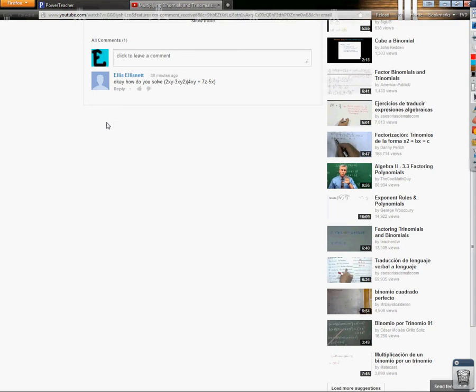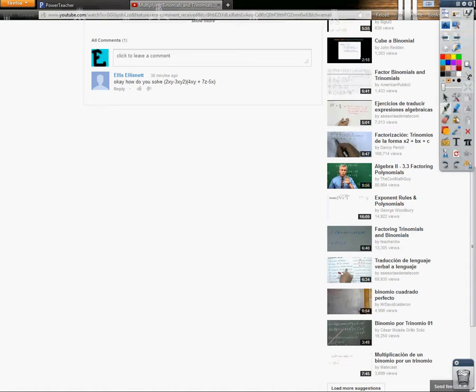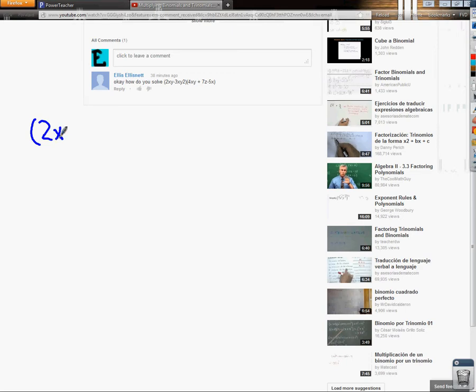Alright, I'm going to try to solve the question exactly on the page that I pulled the question off of. So, I think this is what it means. How do you solve the binomial 2xy minus 3xy squared times the trinomial 4xy plus 7z minus 5x?